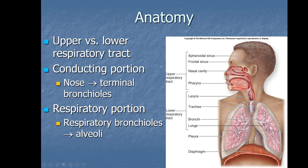Air enters the body via the nose or mouth. Through the nose, it goes to the nasal cavity then the pharynx. Through the mouth, it goes to the oral cavity then the pharynx. Air then passes through the larynx where the vocal cords are, then down the trachea, which branches into two primary bronchi around the level of the heart. Those bronchi enter the lungs and keep branching — called the bronchial tree — ending in tiny bronchioles that terminate in alveoli.